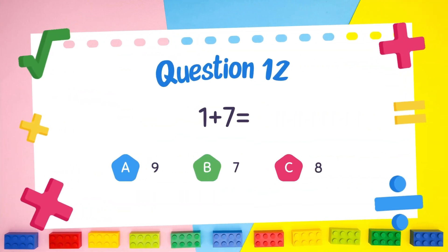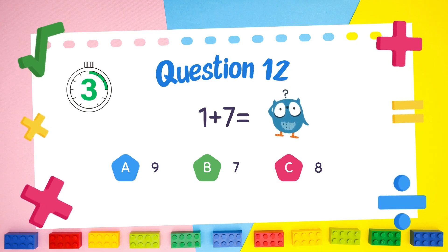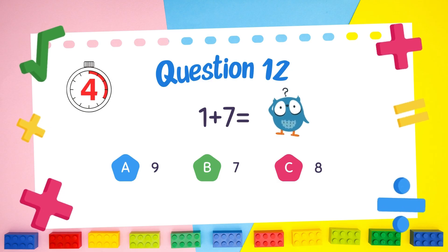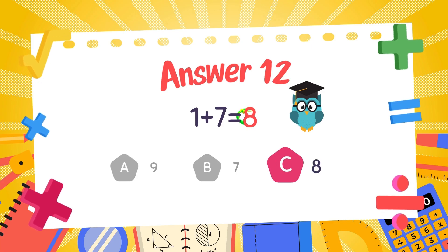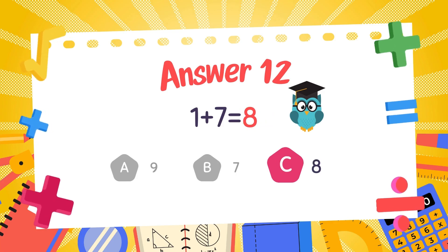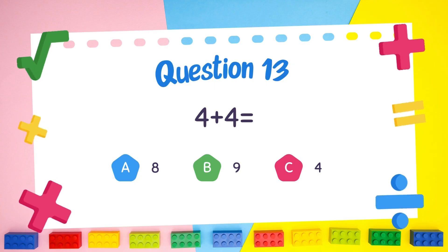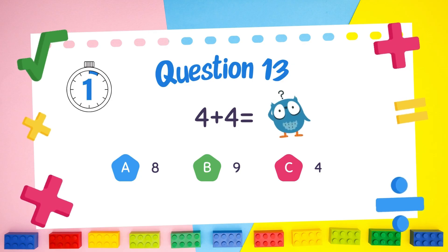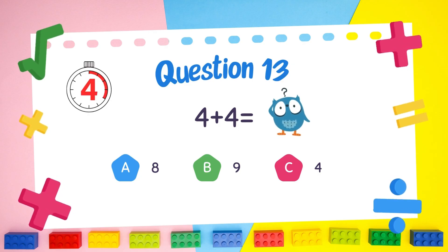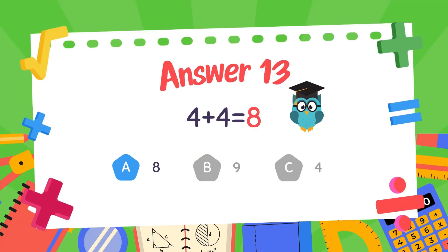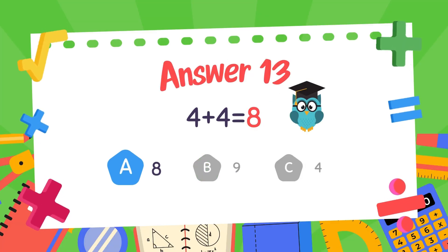What is 1 plus 7? The answer is 8. What is 4 plus 4? The answer is 8.